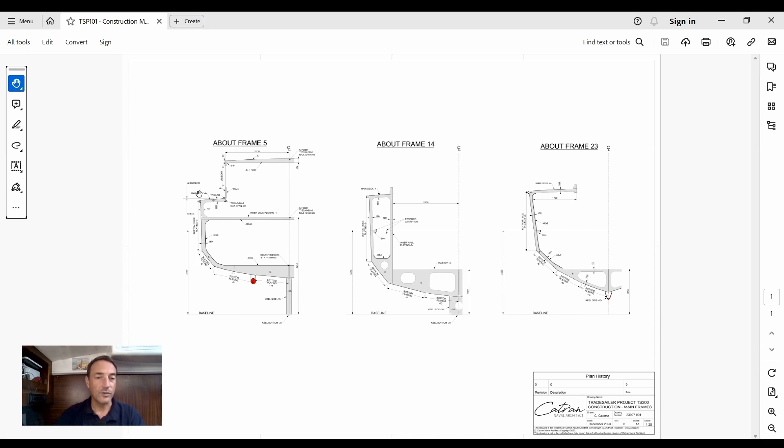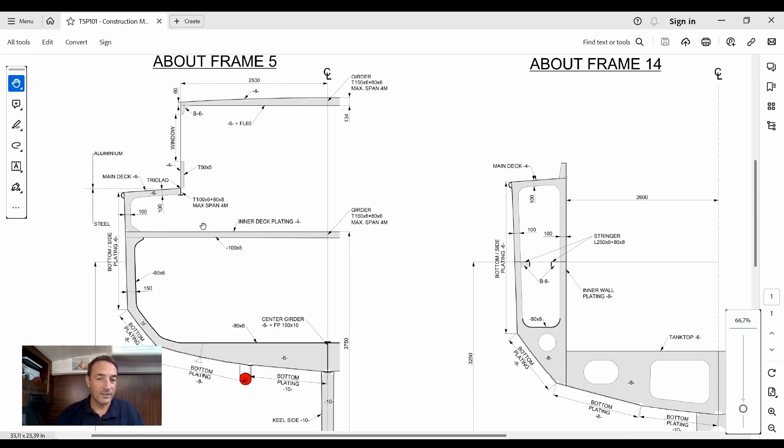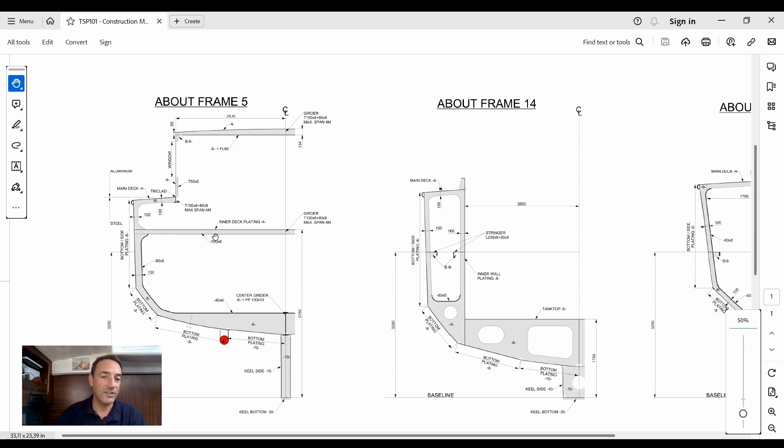We've got about frame 5, which is the area in the accommodation. This is the accommodation, this is the engine room. We've got floors, we've got the bottom plating, and this will be a ballast tank. We've got some stiffeners and aluminum bit at the top. The idea is to make the deck house aluminum, so there will be a split here.